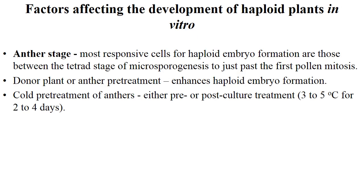Wheat anther cultured on medium having 2,4-D produces callus, while those kept on a medium supplemented with coconut milk gave rise to embryo. Factors affecting development of the haploid plant in vitro: the anther stage most responsive for haploid embryo formation is from the tetrad stage of microsporogenesis to just past the first pollen mitosis. Cold pre-treatment of anthers — either pre- or post-culture — at 3–5°C for 2–4 days leads to an enormous number of haploid developments from the anthers.